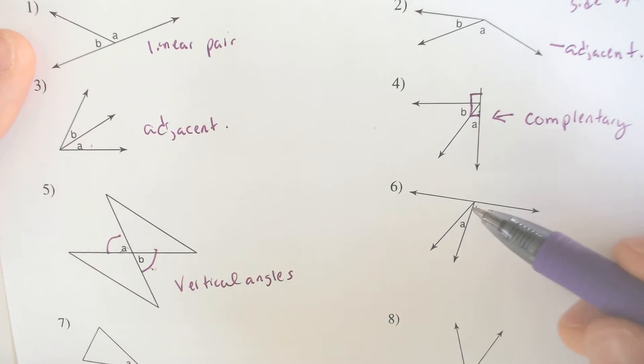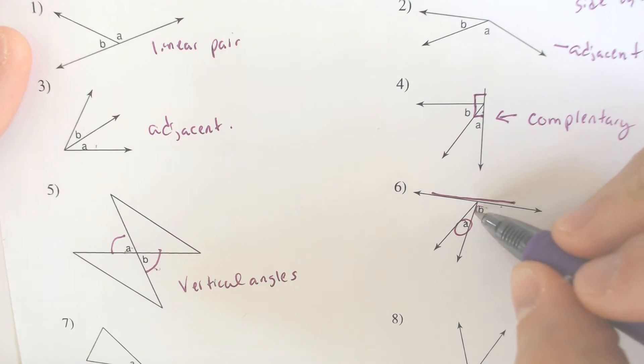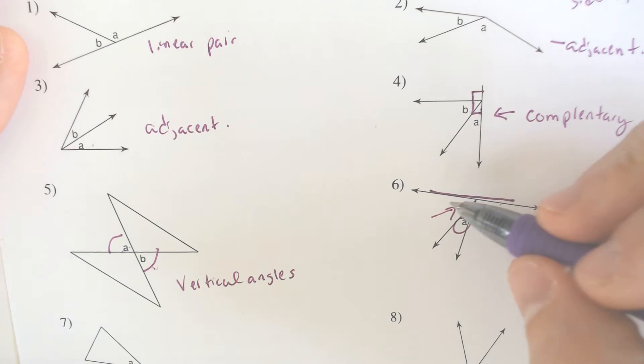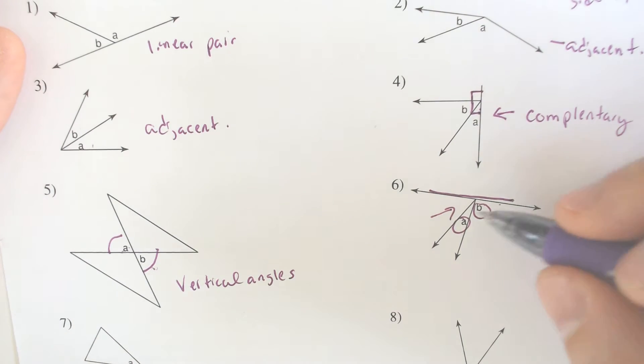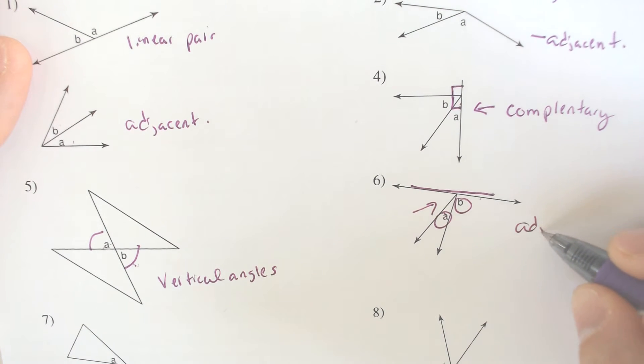Number six, even though there is a line here, A and B are not the entire line. You're missing this other angle that's just vacant and blank. So A and B don't form a line. They are a part of a line but they don't form a line by themselves, so these are just adjacent.